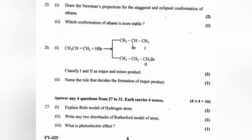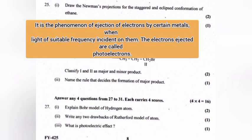What is the photoelectric effect? It is the phenomenon of ejection of electrons by certain metals when light of suitable frequency is incident on them. The ejected electrons are called photoelectrons.